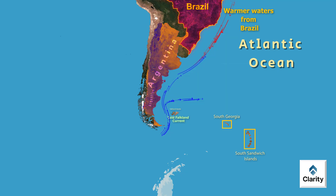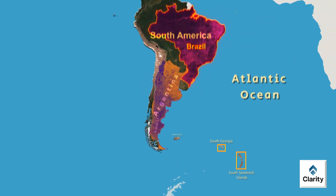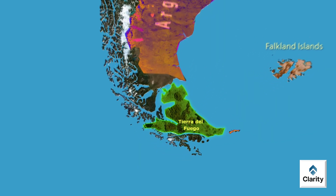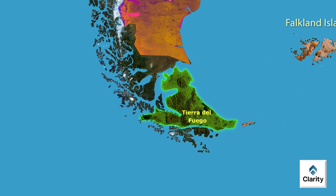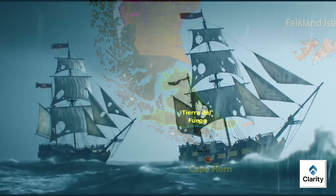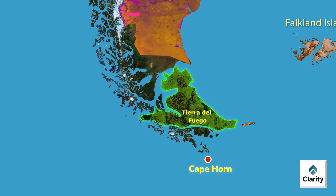Now let us proceed to mainland South America, starting from the southernmost part. Tierra del Fuego is at the southernmost tip of South America. Its southernmost point is called Cape Horn, which is famous for rough seas and stormy weather. Tierra del Fuego is not one island — it is an archipelago of many islands. The largest island is Isla Grande de Tierra del Fuego.